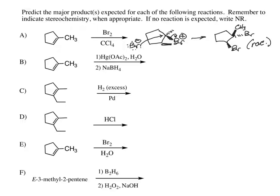Our next example is described as an oxymercuration. This first step is called an oxymercuration step; the second step is called a demercuration or reduction step. That two-step procedure is going to break the pi bond and add two groups across it. It's going to be a hydration — adding an H and an OH. This reaction proceeds with Markovnikov addition, which means the hydrogen goes to the carbon with more hydrogens and the OH goes to the more substituted carbon.